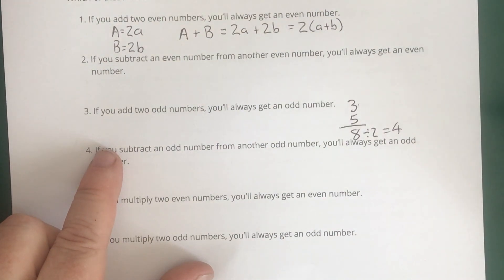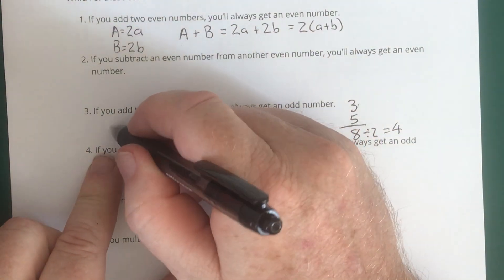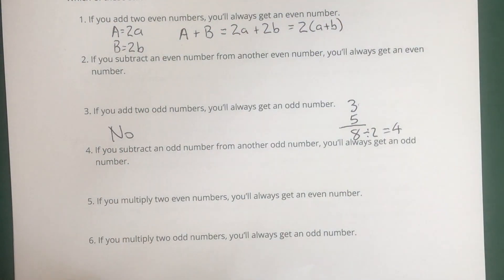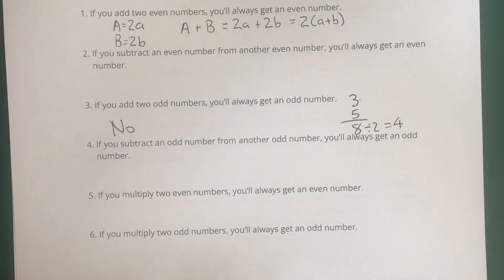So maybe we can multiply, add, and subtract integers and get other integers, but we definitely cannot divide and always get an integer, because we already found one example where we can't.